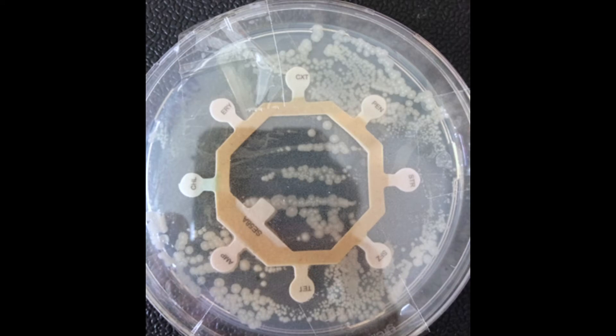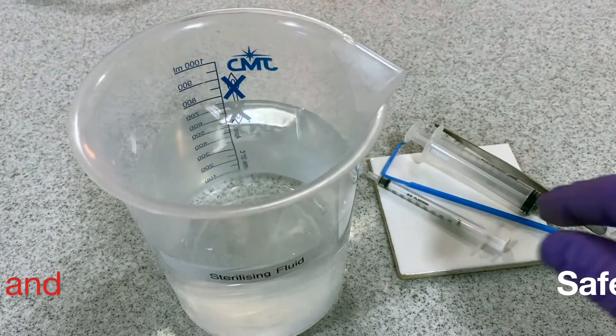Here is an example of a lawn plate showing the zones of inhibition around each antibiotic sample.